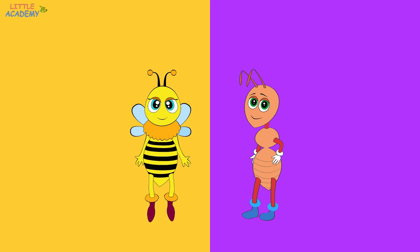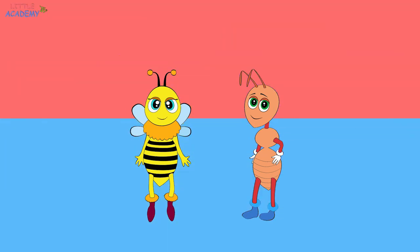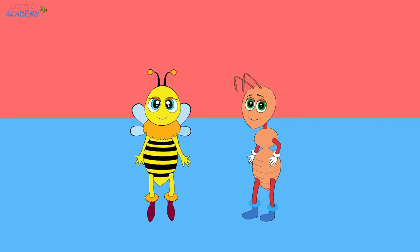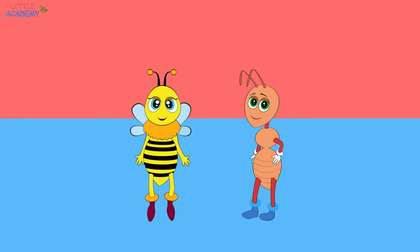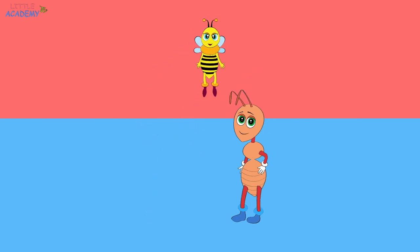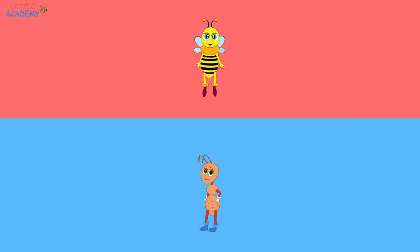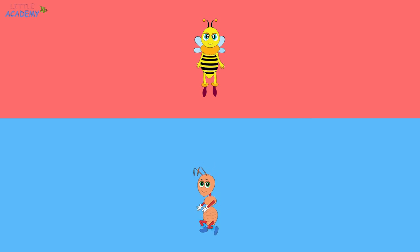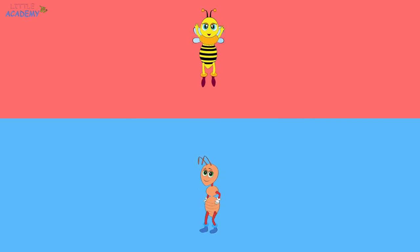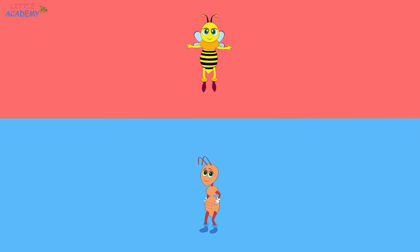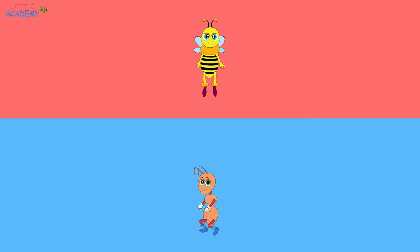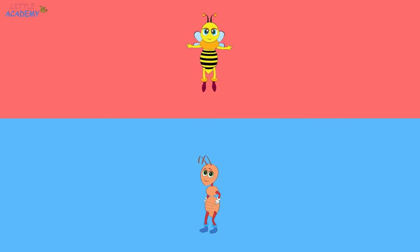Now let's learn about up and down. Look! The screen split into two parts again — red and blue. Now the red part is above. And the blue part is below. Red is up. Blue is down. This is up. And this is down. Up. Down. Up. Down.